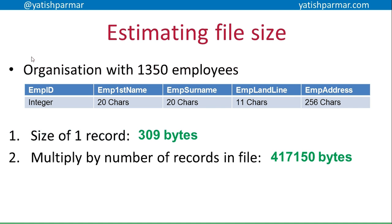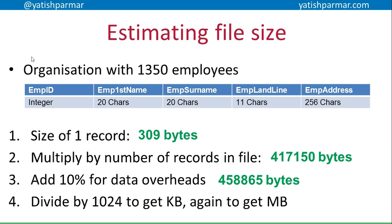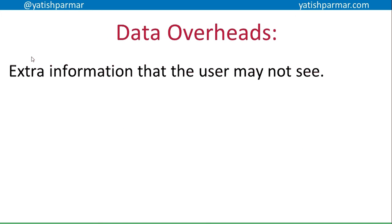I multiply that by the number of records in the file — 1,350 employees — so 309 bytes times 1,350 gives 417,150 bytes. Then I add 10% for data overheads, giving 458,865 bytes. That's an awkward number to deal with, so I divide by 1,024 to get kilobytes, and divide by 1,024 again to get megabytes. In this case, dividing gives approximately 448 KB for the file. Really easy.